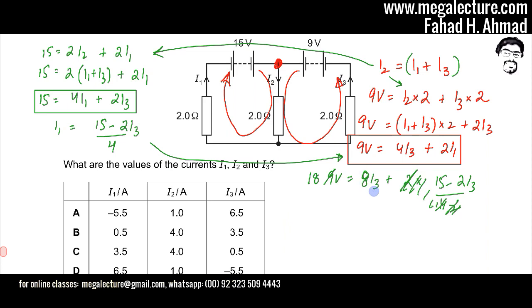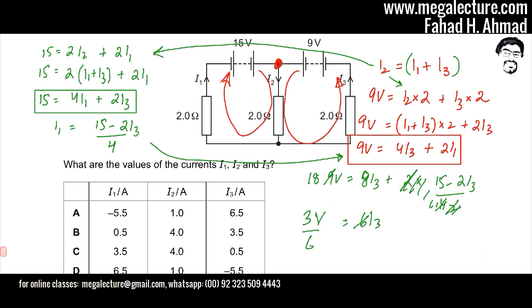There's 8i3 and minus 2i3, which gives 6i3, and on the other side 18 minus 15 equals 3. Dividing both sides by 6, i3 equals 0.5.